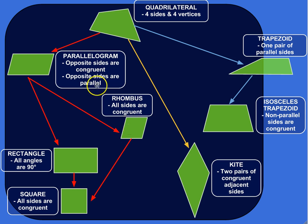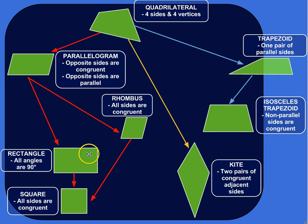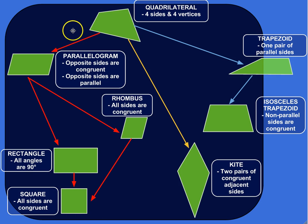Let's back up to parallelogram. A special kind of parallelogram is a rectangle, where the opposite sides are congruent, the opposite sides are parallel, but all the angles are 90-degree angles. And then a square is a subset of rectangles, where not only are all the angles 90 degrees and opposite sides are congruent and parallel, but actually all the sides are congruent. So that's the parallelogram side of the family of quadrilaterals.